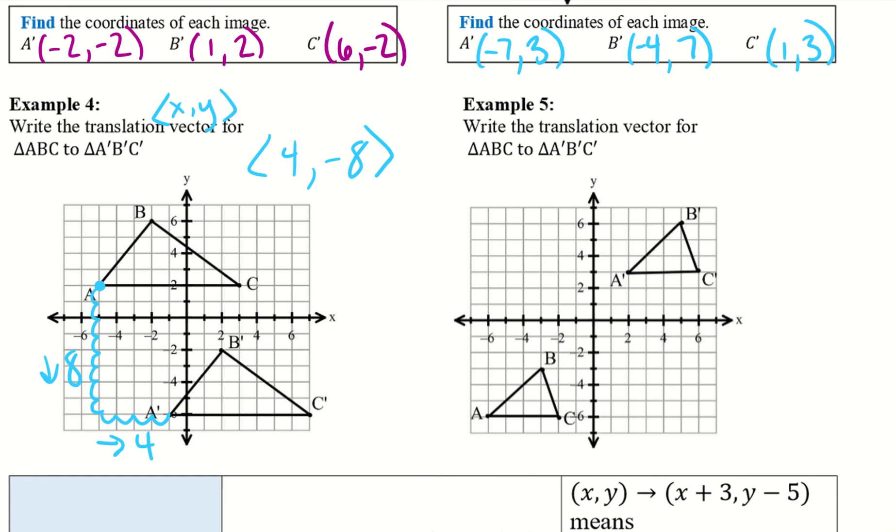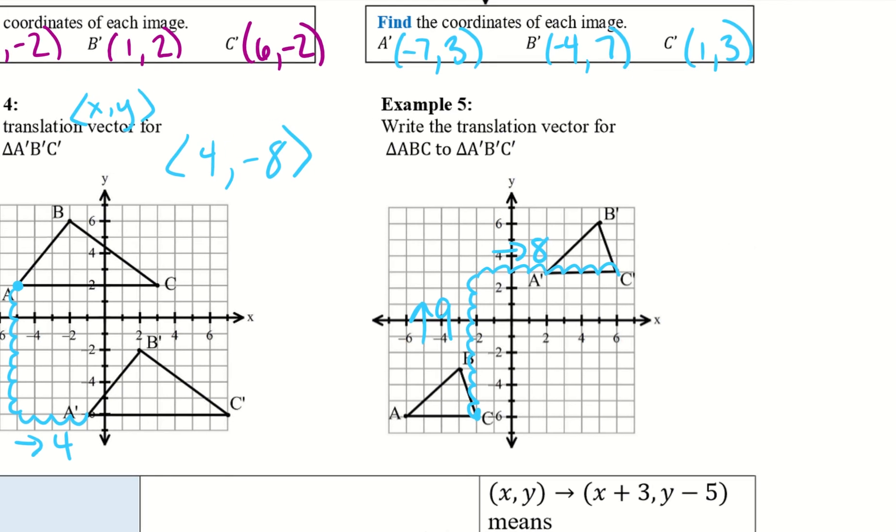Alright, example 5, we want to write the translation vector for ABC to A'B'C'. Alright, so once again we pick any point. Let's go ahead and do C this time. So I go up 1, 2, 3, 4, 5, 6, 7, 8, 9. Yep, so I went up 9, and then I want to go all the way over 1, 2, 3, 4, 5, 6, 7, 8. So I went right 8.